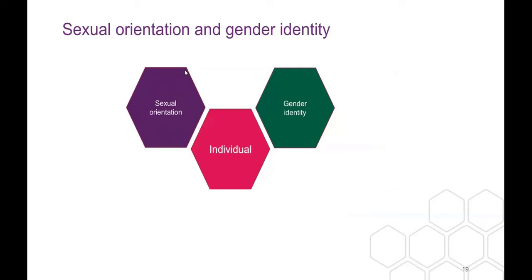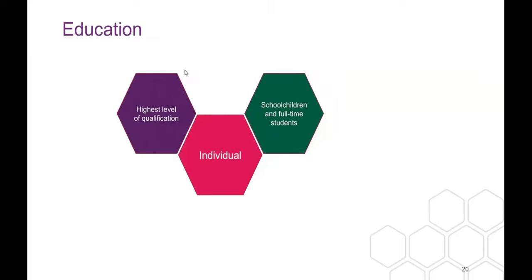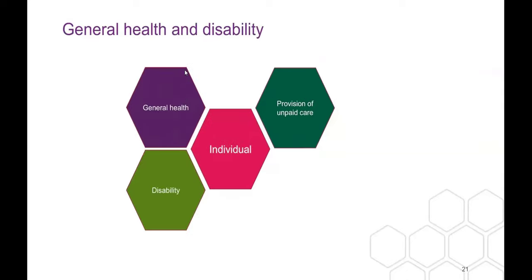New questions in 2021 covered sexual orientation and gender identity. The return rates have been quite good, but from an ONS perspective they're quite nervous about the geographical scale at which they allow this data to be seen, so you may have to deal with a higher level of geography than ideally you'd like. In terms of education, we get the highest level of qualification and whether individuals are school children and full-time students. Education deprivation is defined as a household where nobody has a level 2 qualification or above — level 2 being the equivalent of GCSE.